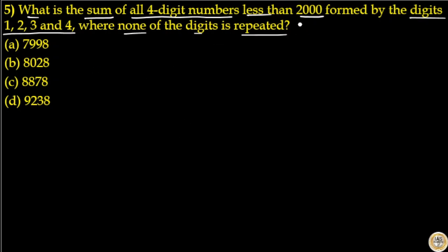The question clearly says the four-digit number should be less than 2000. That means if the digits are 1, 2, 3, and 4, then the first digit should be 1, and the remaining places are 3 and remaining digits are 3.